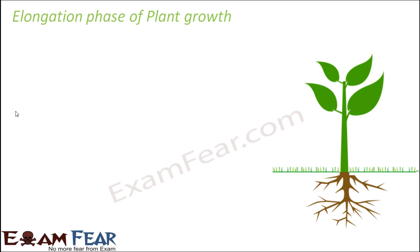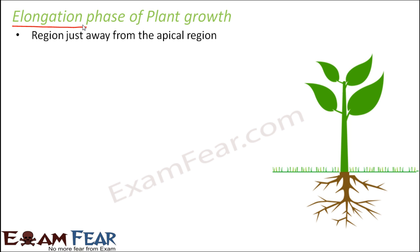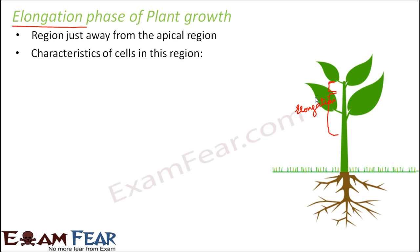The next phase is the elongation phase. Elongation means to get elongated or to lengthen something, so this phase represents the increase in length. This region is just away from the apical region — the apical region was the meristematic region, and after it, this portion becomes the elongation zone. The cells in this region enlarge, and when the cells enlarge, elongation occurs — that is, lengthening of the stem. New cell wall deposition also takes place here, because the cells are not dividing, only getting enlarged.